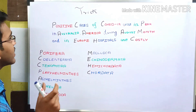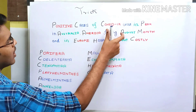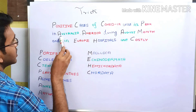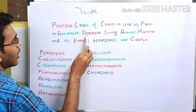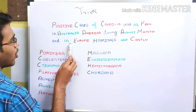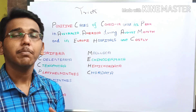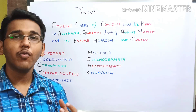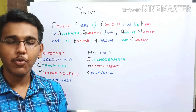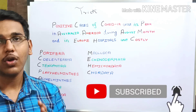The mnemonic goes like this: 'The number of positive cases of COVID-19 was at peak in Australia and America during August month, and in Europe, hospitals are causing weakness because of this COVID impact.' This is the mnemonic to memorize the 11 phylums of the animal kingdom.